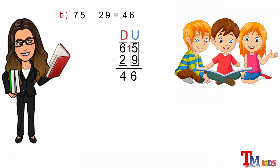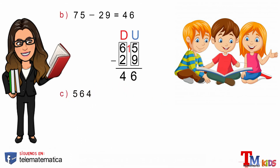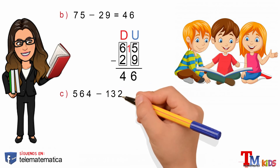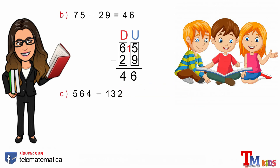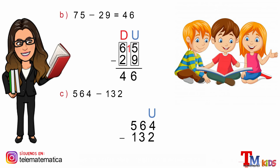A continuación veremos cómo realizar este proceso para la resta con números de tres cifras. Literal C: 564 menos 132. En primer lugar, escribimos los números verticalmente teniendo en cuenta que el minuendo se coloca encima y el sustraendo debajo. En segundo lugar, identificar la columna de las unidades y restar.